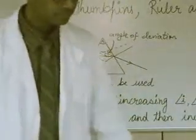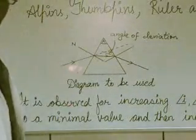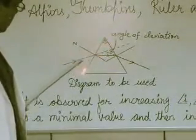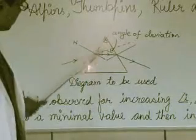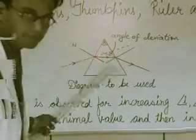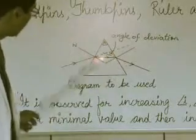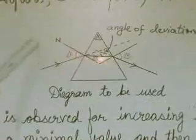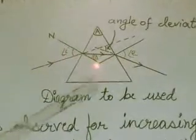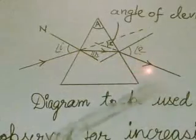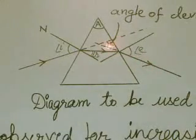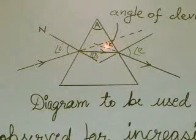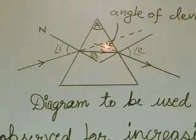This is the diagram we are going to use. It can be seen that an incident ray hitting one side of the prism bends and then emerges out like this. We can mark different angles: this is the angle of incidence, this is the angle of refraction, this is the angle of emergence, and this is the angle of deviation. We shall see that for different angles of incidence, how does the angle of deviation behave.